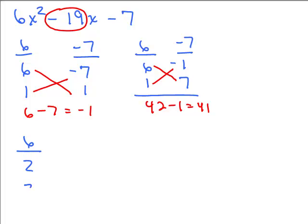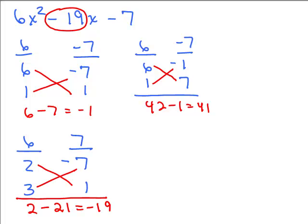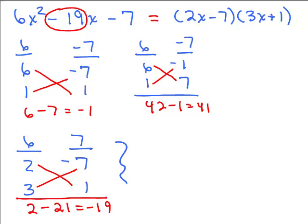That's the only possibility with 6 and 1, so we'll have to try 2 and 3. For negative 7, we put 7 in one place and 1 in the other, so let's put 7 and 1 and put a minus in front of one of the numbers — let's try it here. We crisscross: that's going to be 2 and that will be negative 21, and that gives me negative 19 — and I wanted negative 19! So this is the winning combination. Our answer is 2x minus 7 times 3x plus 1.